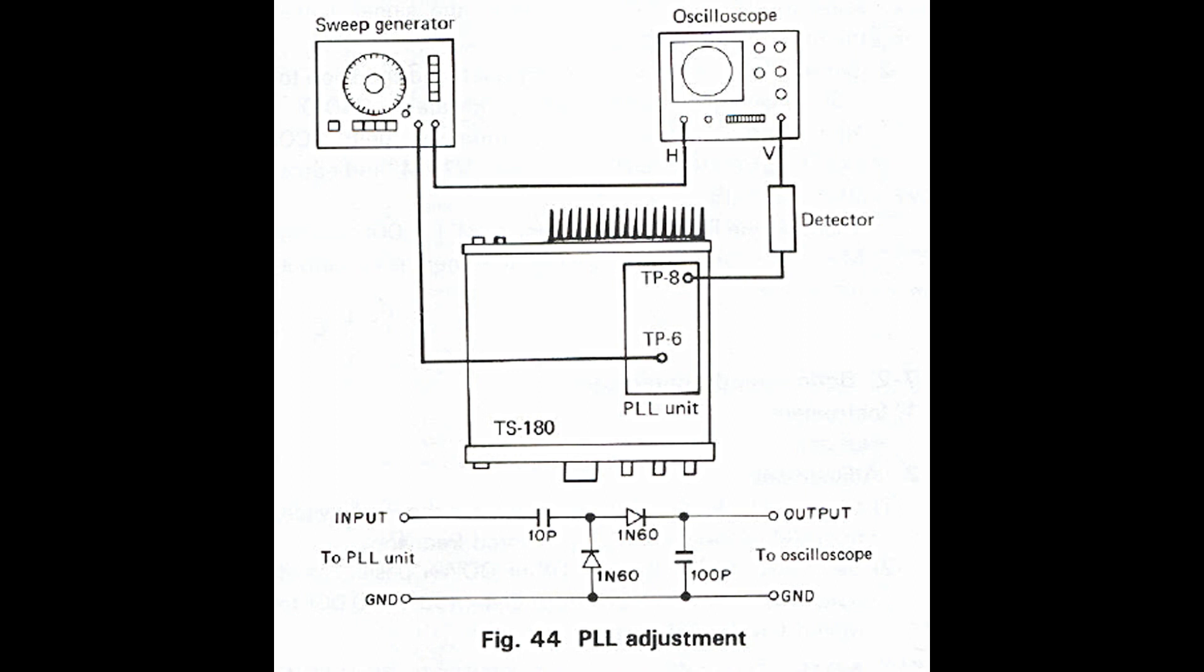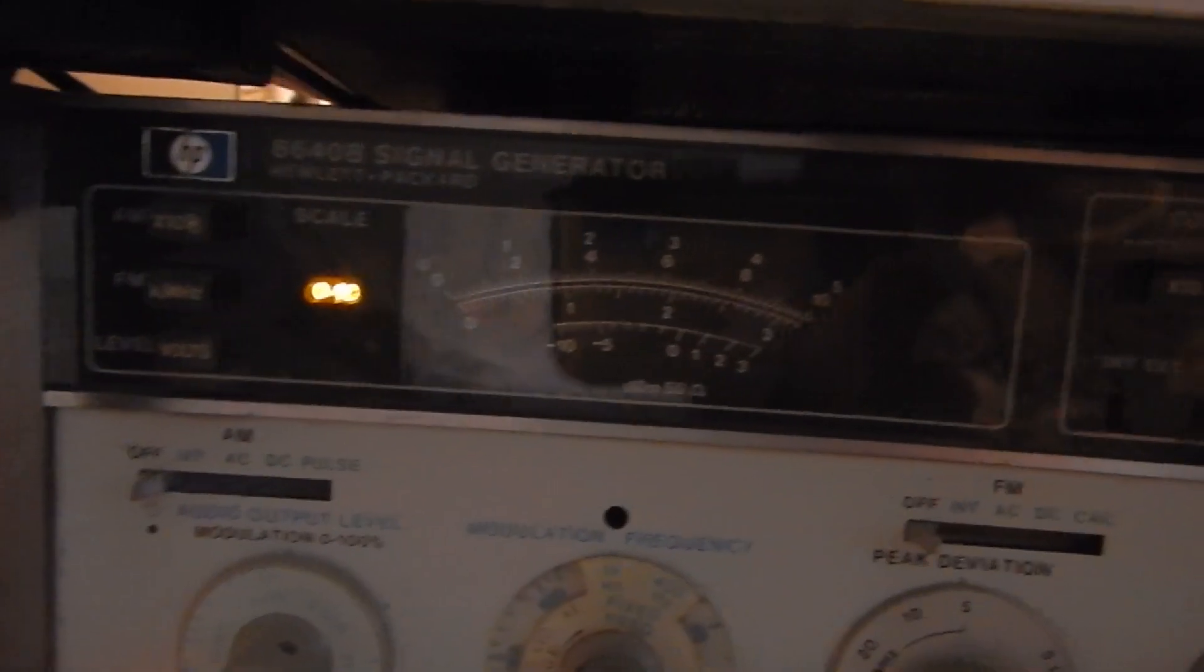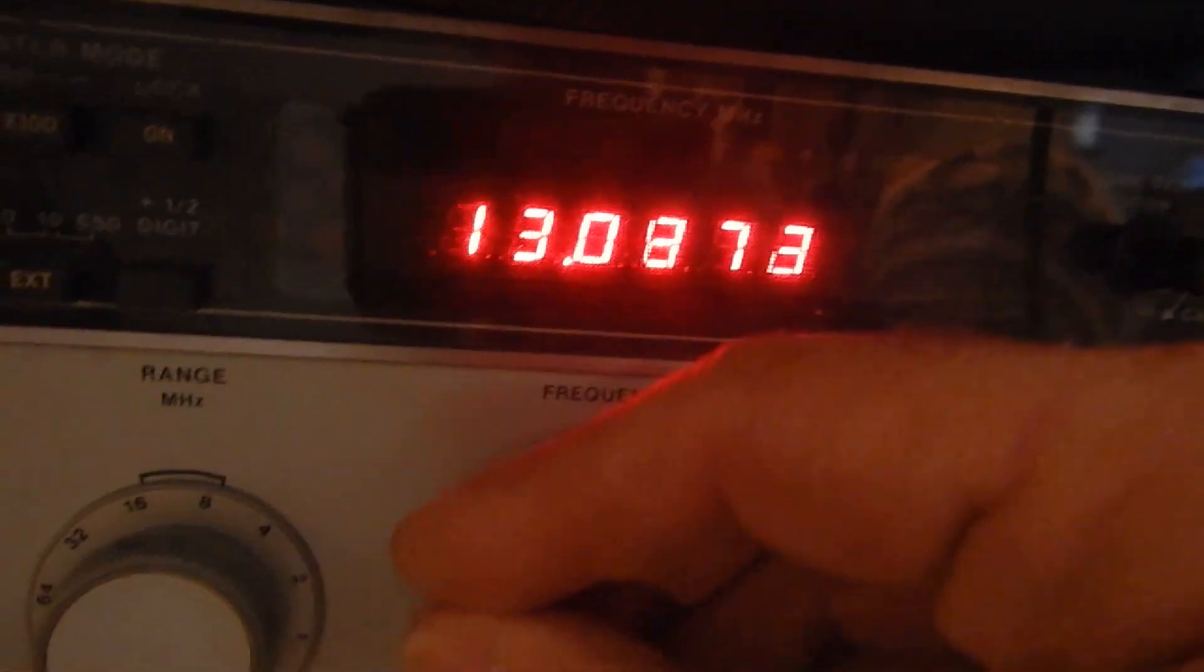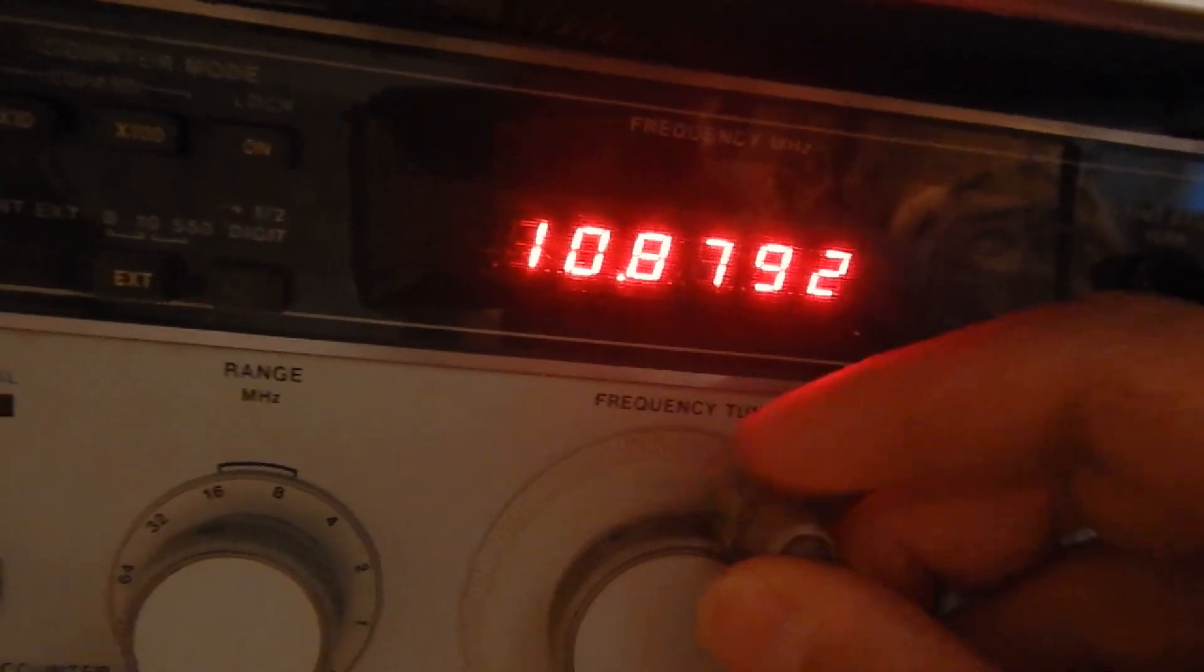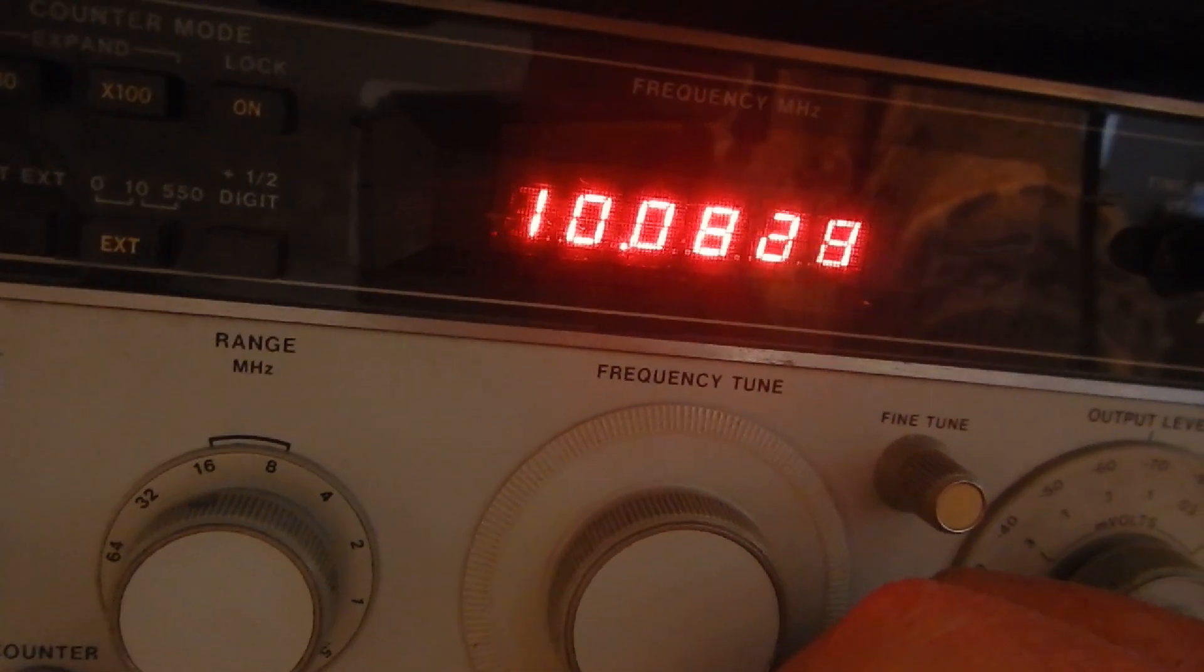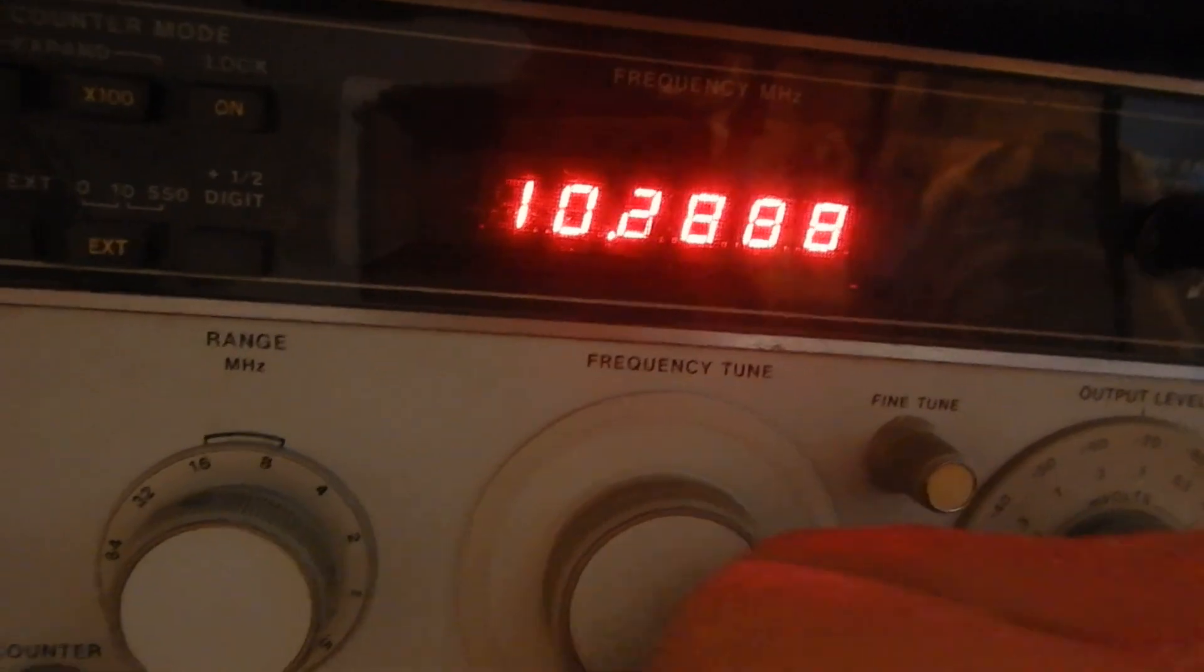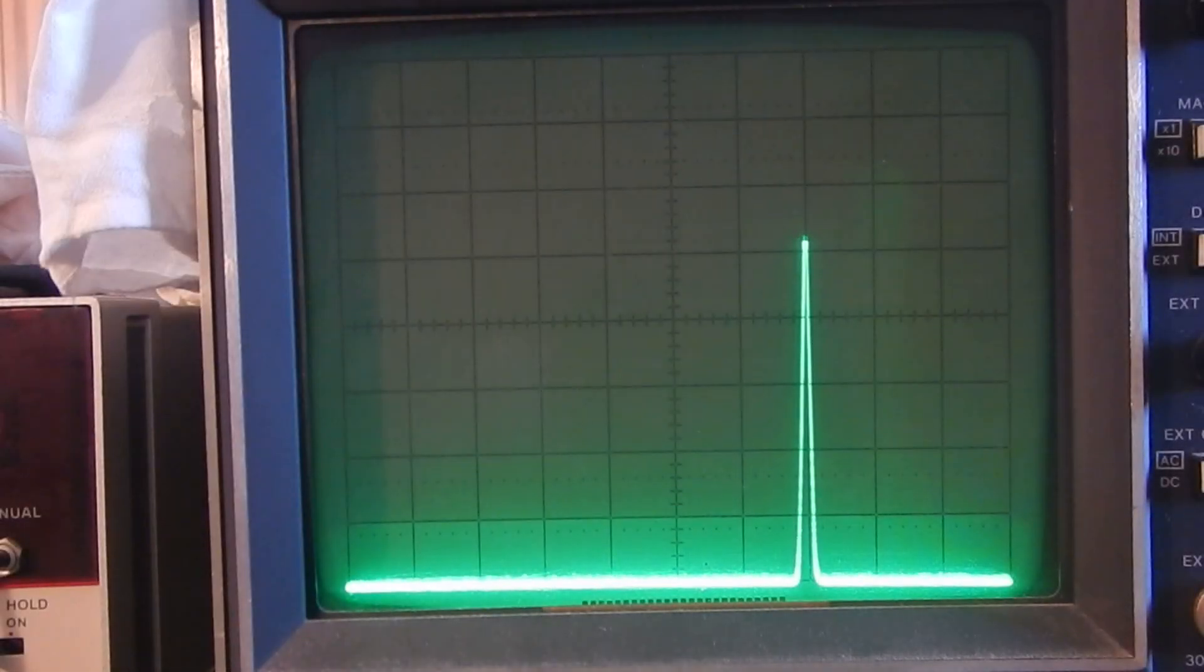To inject the test signal, I'll use an RF generator, the HP 8640B. This one has no frequency sweep capabilities. So I will manually sweep the tuning on the required interval between 13.5 MHz and 10 MHz, back and forth.